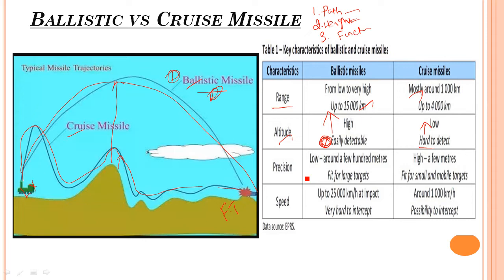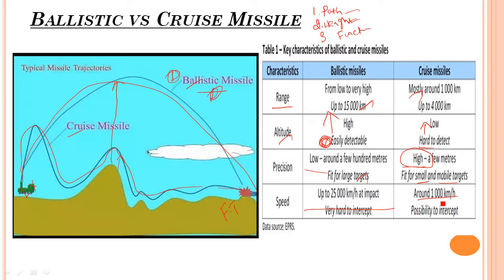Regarding accuracy: the accuracy of the ballistic missile is relatively low, making it more useful for large fixed targets. But the cruise missile has higher accuracy for small and mobile targets — it can hit a moving target. The ballistic missile is very high speed, while the cruise missile is comparatively low speed. This is the key difference between the ballistic and the cruise missile.